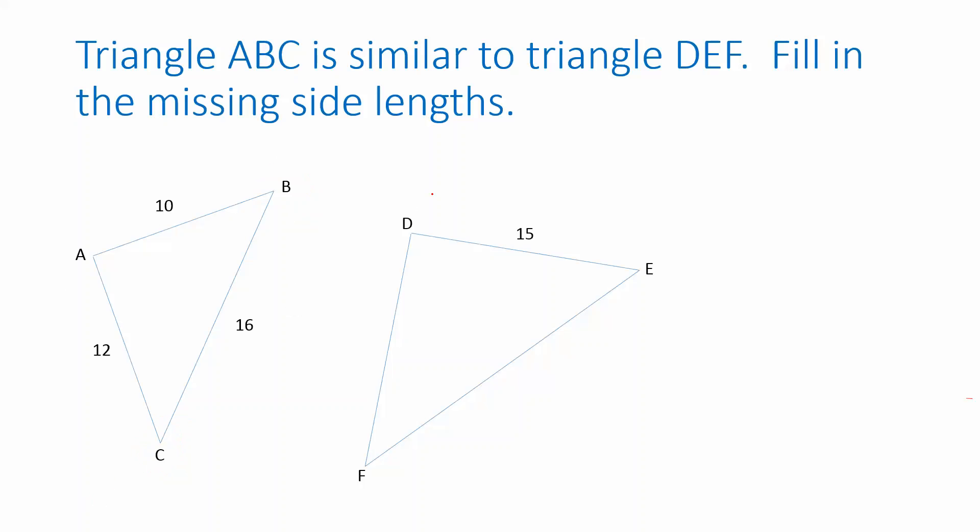And we're told that these are similar. In particular, because of the way they're named, we imagine we're going from A to B, then to C. And we're told that it's similar to the triangle you get if you go from D to E and then F. And so we are supposed to interpret that by saying these two sides correspond to each other.